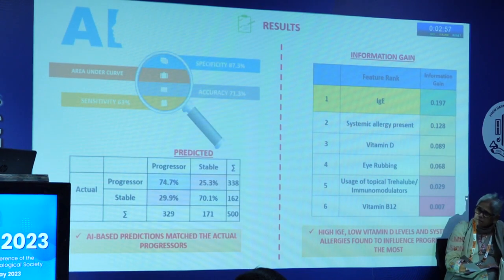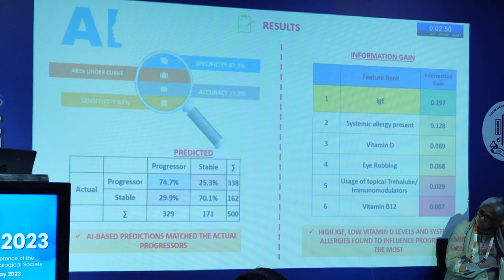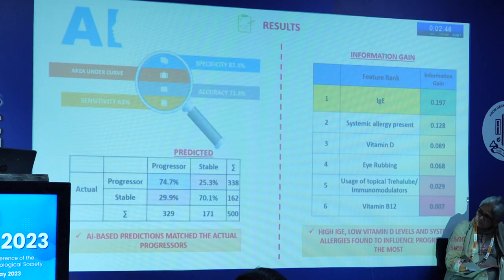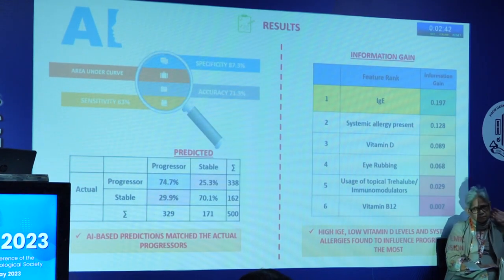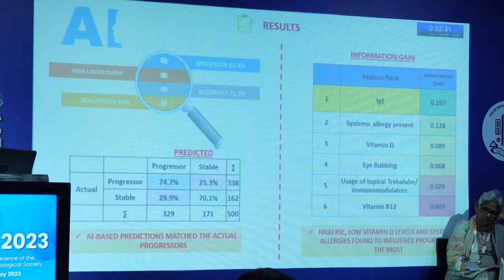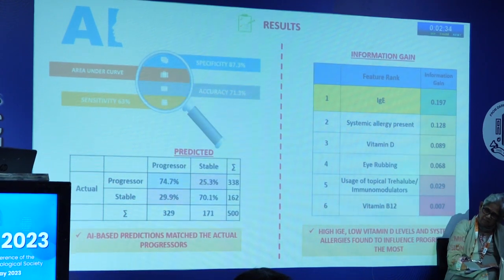Our model predicted that 74% of patients classified as progressors on topographic factors were also confirmed as progressors by our second AI model incorporating demographic and risk factors. Similarly, in stable patients, 70% were indicated as stable on topographic features and our second AI model with risk factors and demographic factors showed the same result.